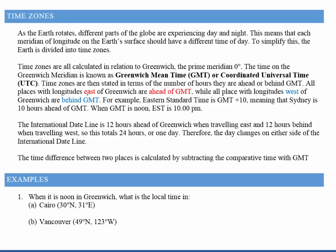All places that are east are ahead of Greenwich meridian time. I like to think of it like a number line — Greenwich is in the middle, everything to the east is ahead, everything to the west is behind, just like a normal number line. Eastern Standard Time is Greenwich plus 10, meaning Sydney is 10 hours ahead of Greenwich Mean Time. So when it's noon in Greenwich, it's 10 pm in Eastern Standard Time.